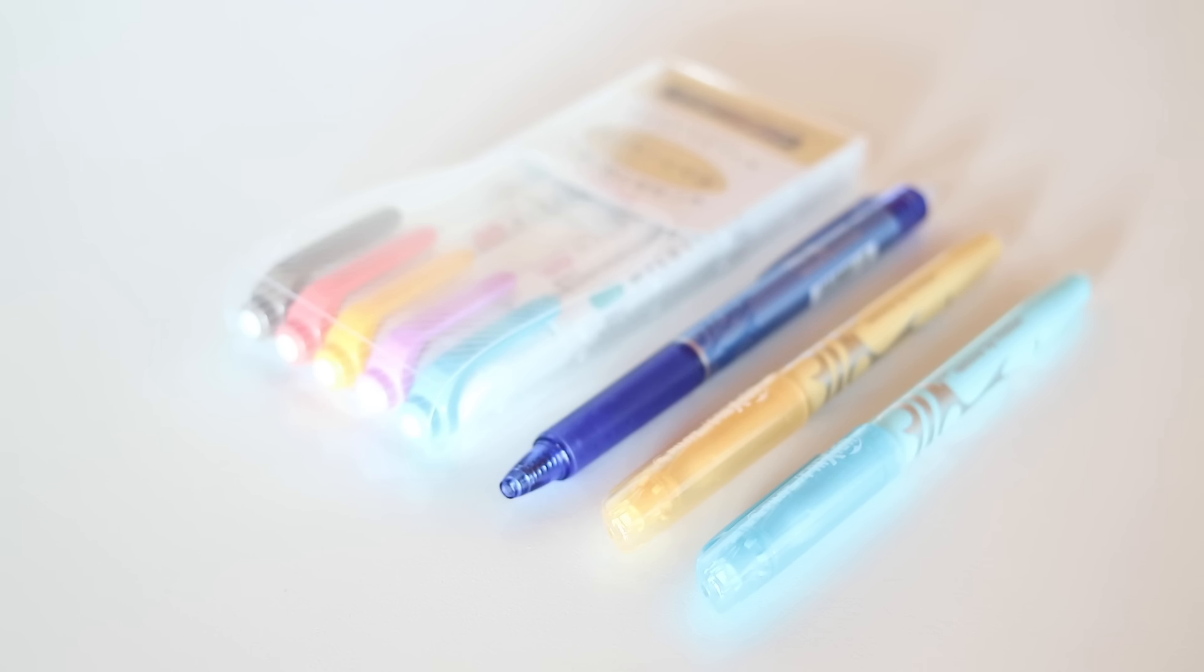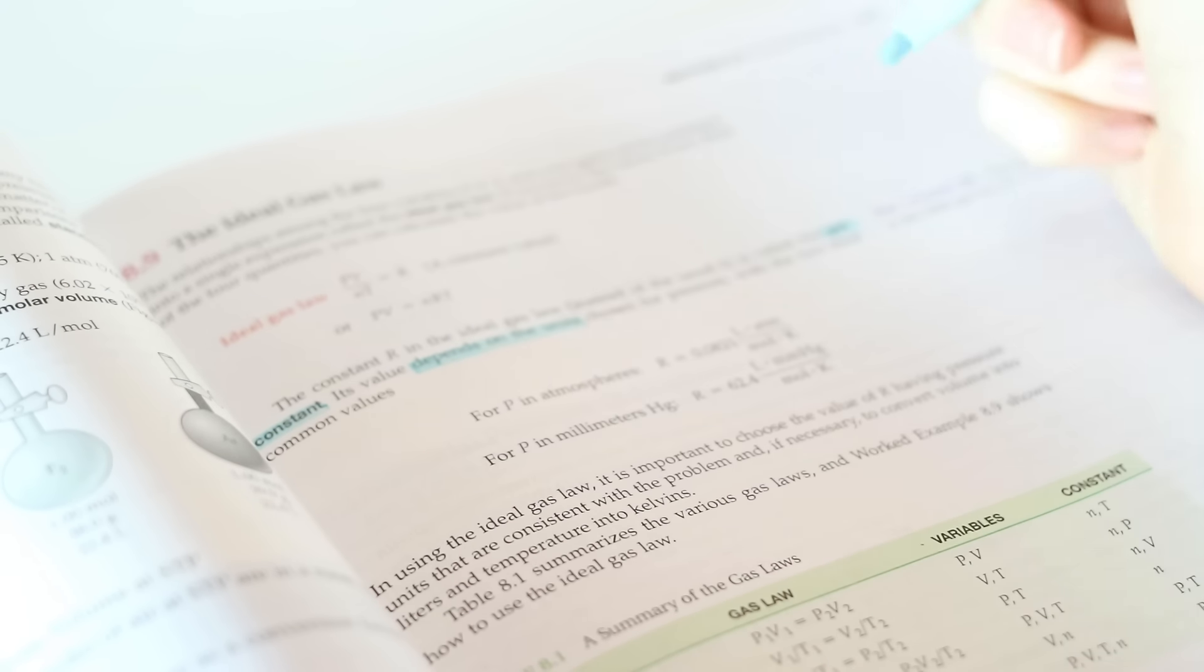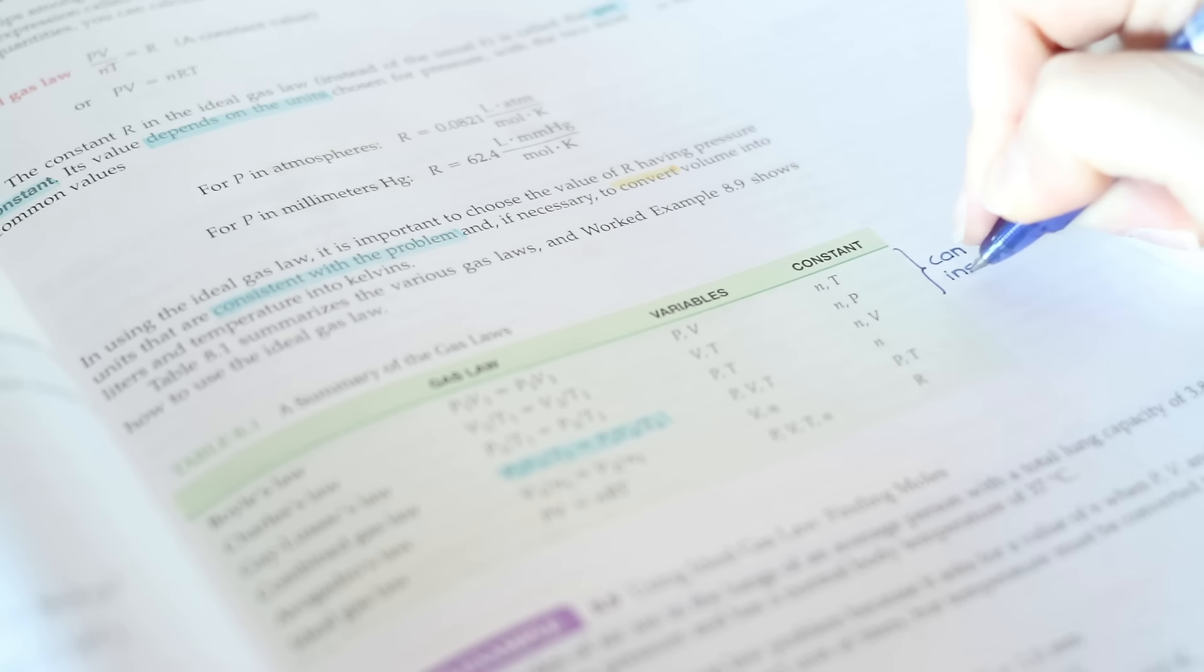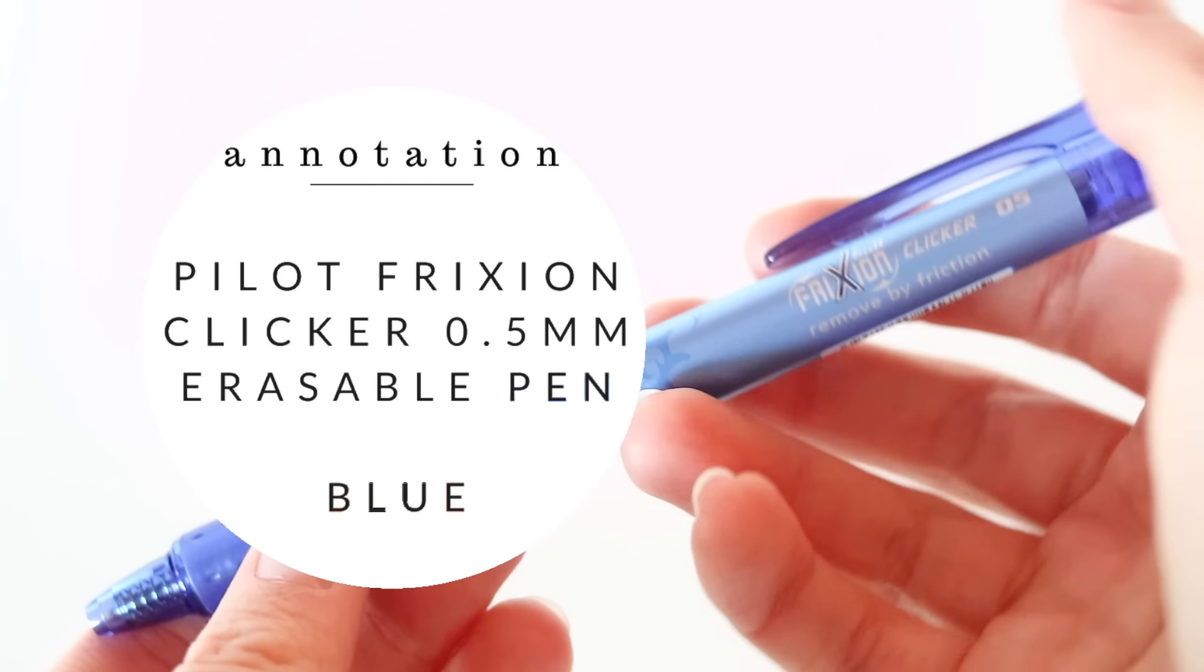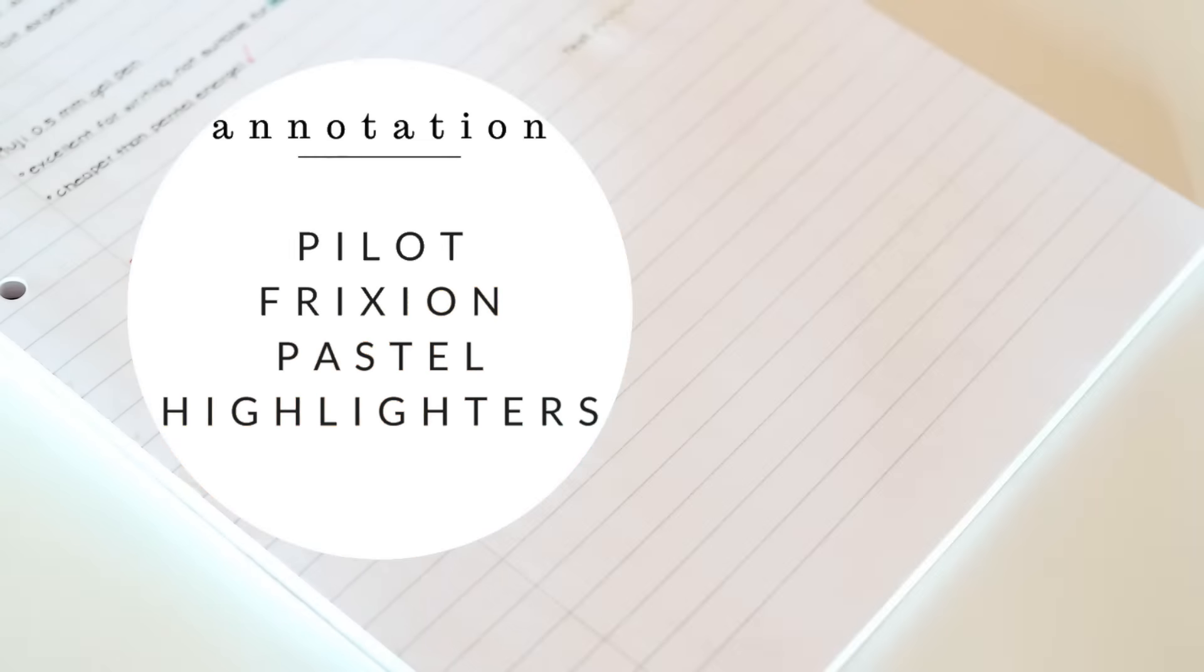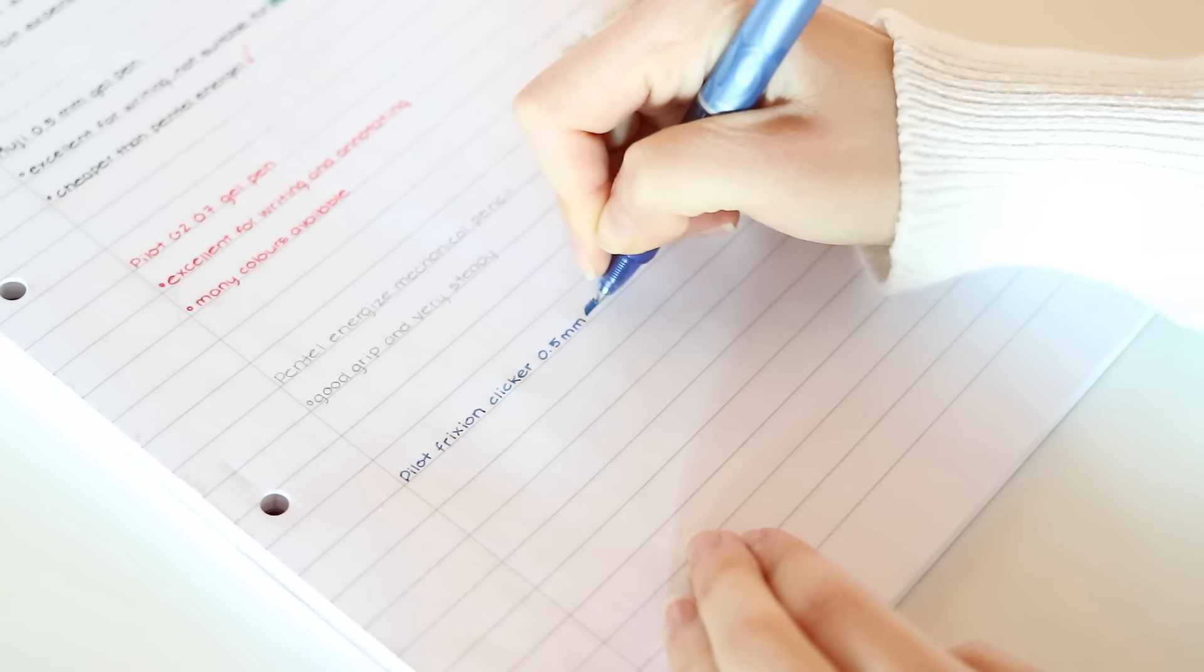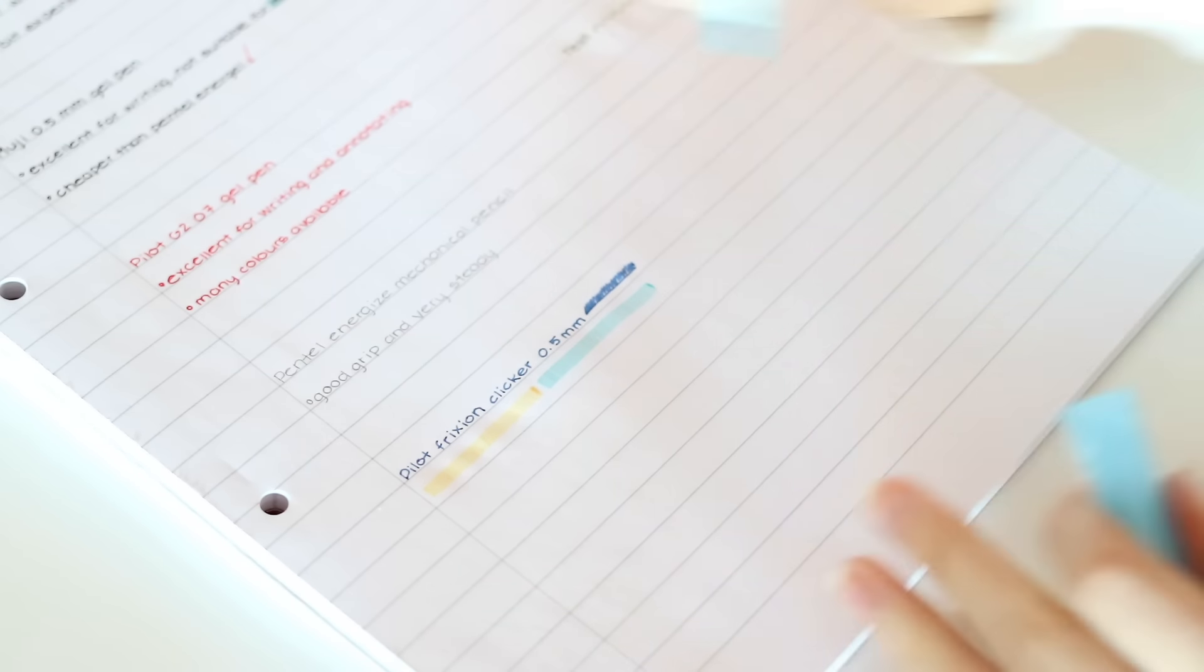The next category is annotating. When I take textbook notes I like to start by going over the current chapter and annotating it and I prefer to use erasable pens and markers for this. The pen I use is the Pilot FriXion Clicker erasable gel pen in blue and I also use the Pilot FriXion Pastel highlighters. The colors of some of these highlighters are very weak but the blue and orange ones they work really well.